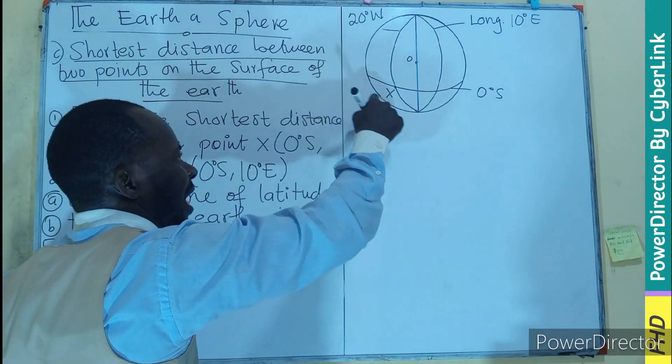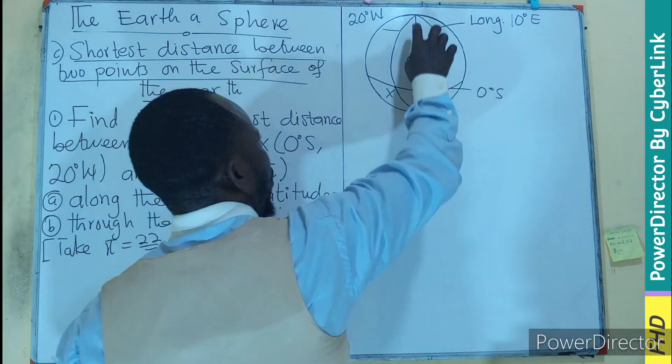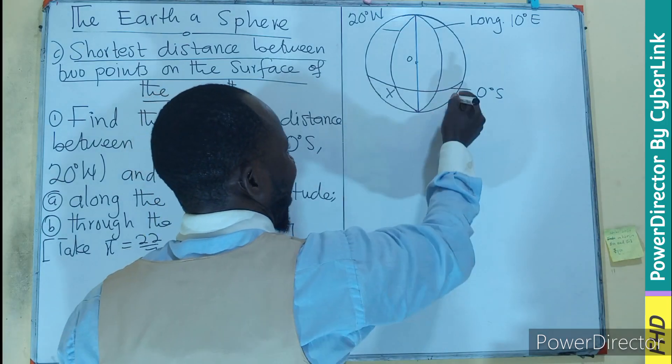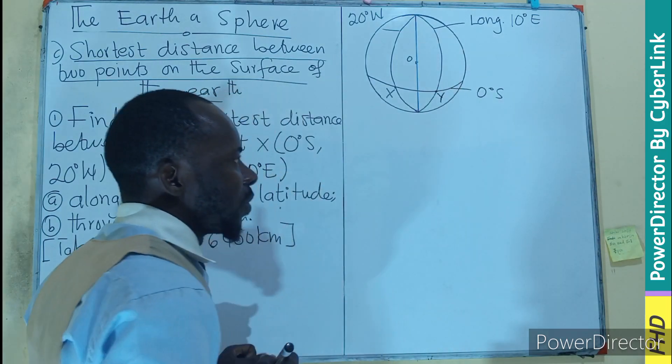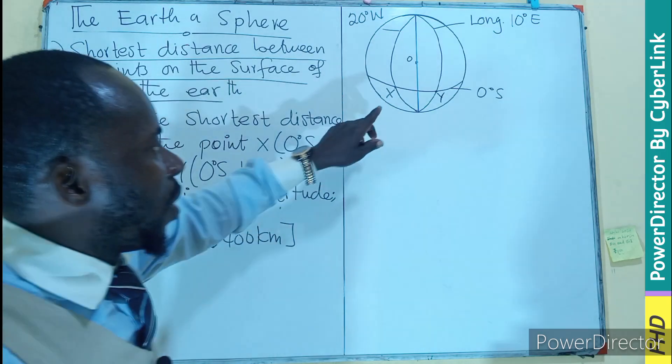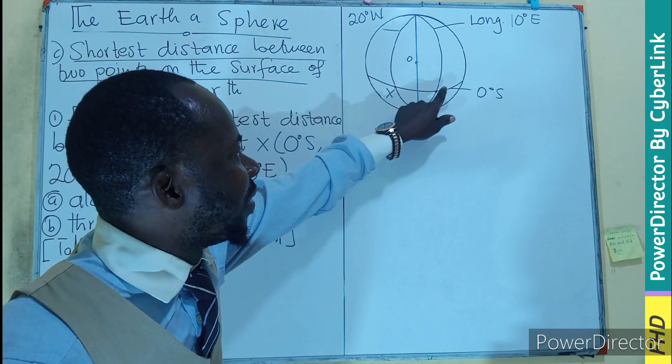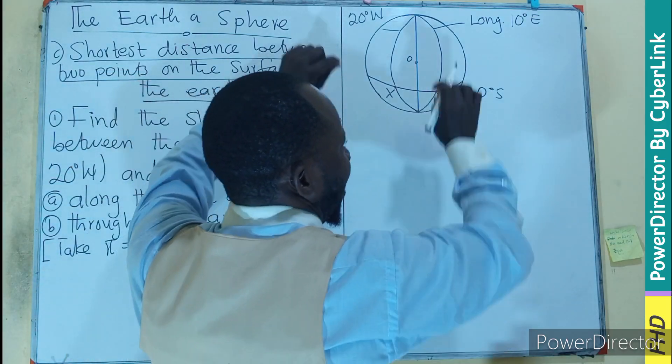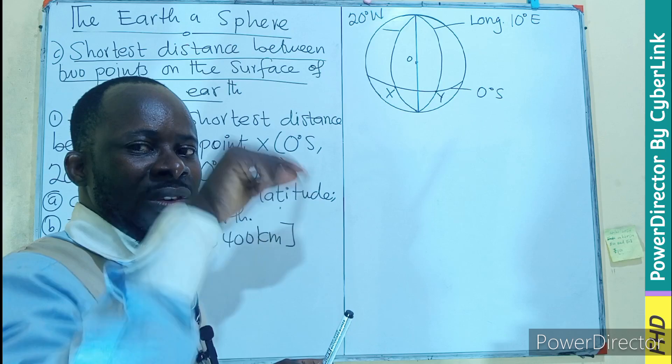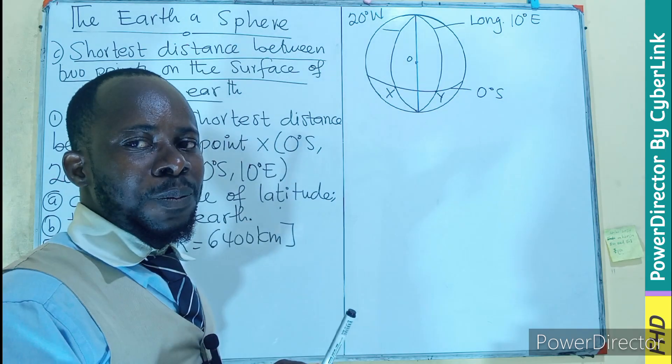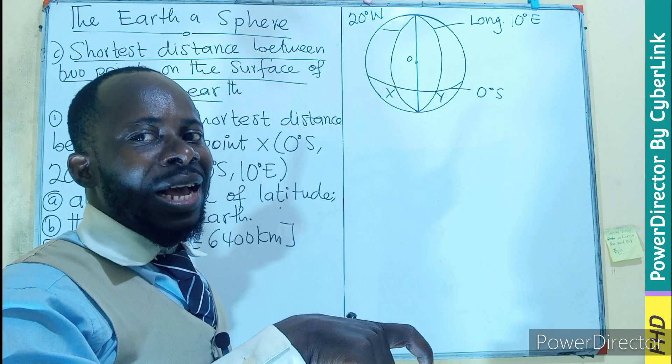Then on the same latitude 0, we have longitude 10. Longitude 10 is also meeting the latitude here. So this is our Y. So what are we looking for? We are looking for the distance between these. This is our latitude. And if it is latitude 0, it means it is the equator. And the equator is a great circle.